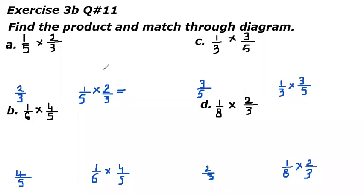Dear students, now we will do exercise 3B question number 11. Find the product and match through diagram. Part A is one-fifth of two-thirds. One-fifth is the first fraction, two-thirds is the second fraction.